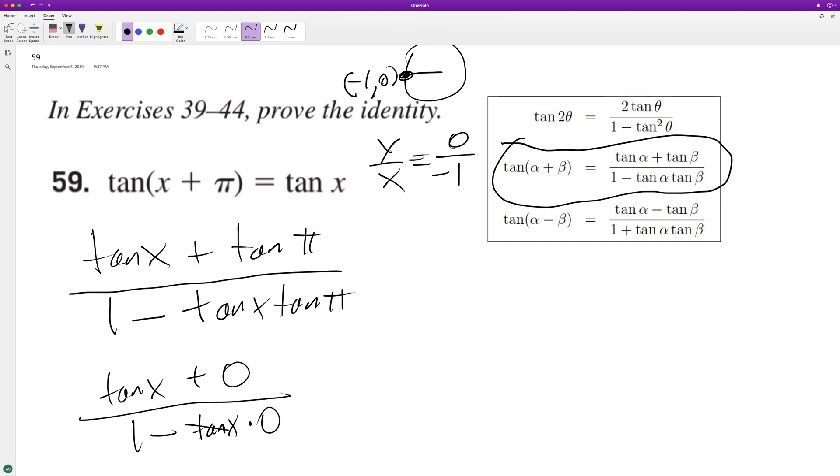So zero times tangent of x is just zero. So what we end up with is tangent of x over one, which is just tangent of x, and that's it.